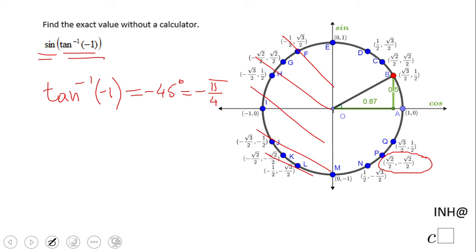I'm going to say sine of negative π over 4. Now the question is, what is the sine of negative π over 4? We're going to look here one more time.